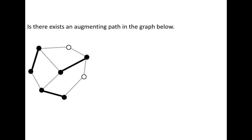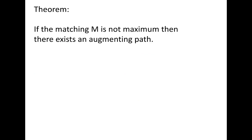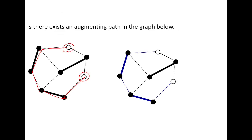Can you identify an augmenting path in this graph? When looking for an augmenting path, always look for two unmatched vertices and find an alternating path between them. Going through this graph: not-in-M, then M, then M, then not-in-M — there exists an alternating path between the two unmatched vertices. Therefore we can augment, and the maximum matching becomes four.